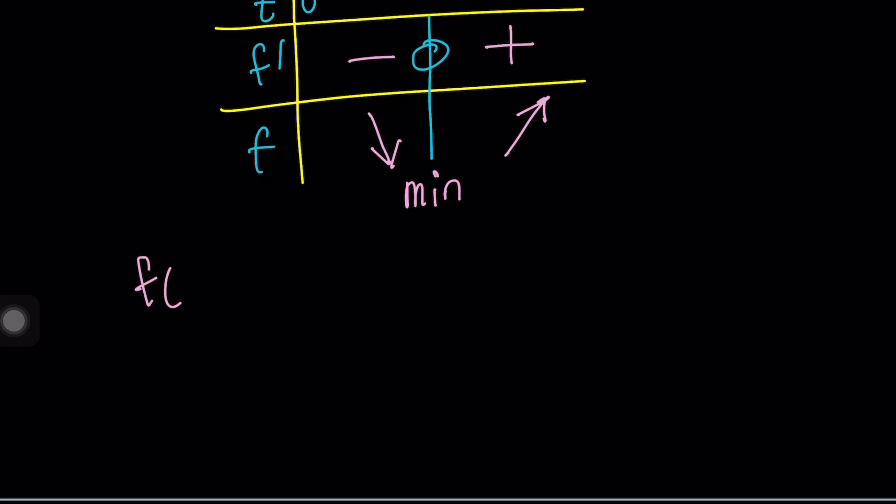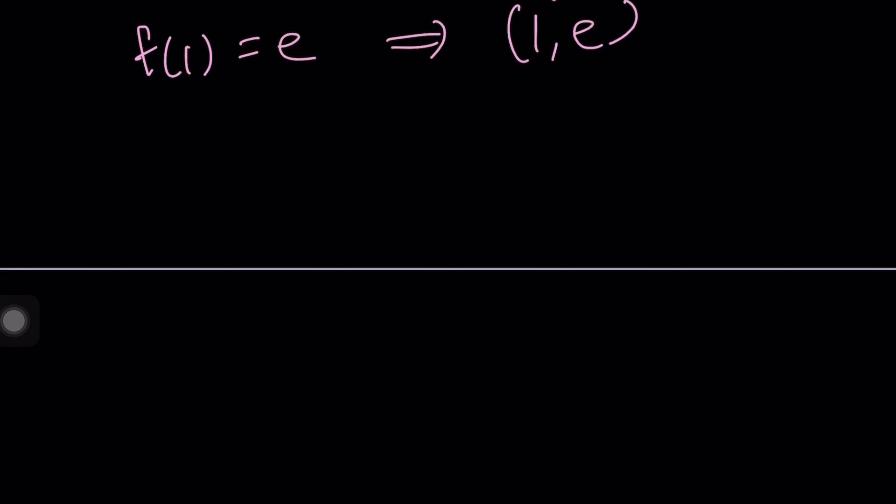So, what is F of 1? F of 1 is E. In other words, we have a minimum at 1, E. That's a point on the graph. And the graph when this function is graphed looks like something like this. We have a function that decreases and then increases making this minimum at 1, E. This is not drawn to scale at all but we have the T F to the T.